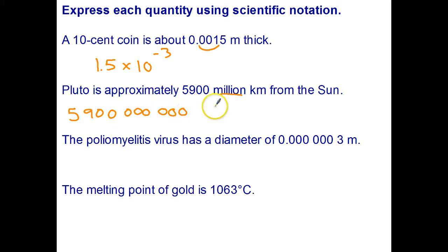So there it is written as an ordinary number, and now in scientific notation I've got to move my decimal point three, six, nine places, so times 10 to the power of 9.